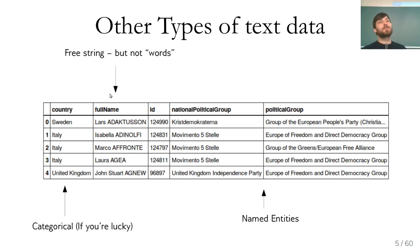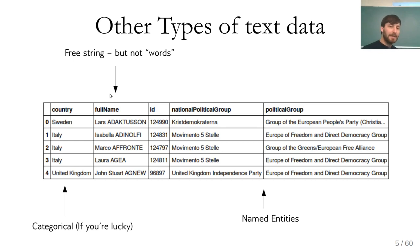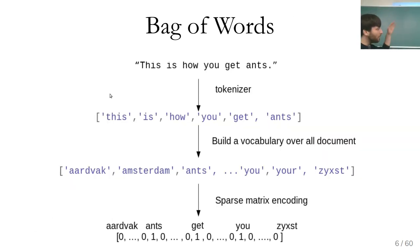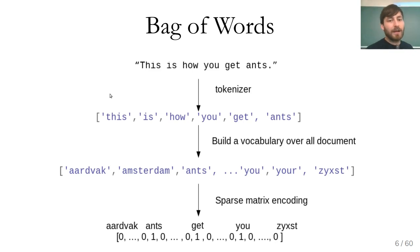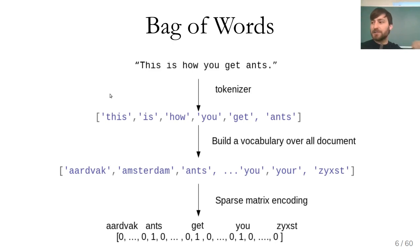The thing I want to talk about most is free text in English. The most classical approach — the mother of all approaches that everything else is built on — is the bag of words approach. Let's say you start with a string; here's a very short one: 'this is how you get ants.' The first step is tokenization, which means you break the string up into words. This is done simply by breaking on whitespace, with some normalization like lowercasing.